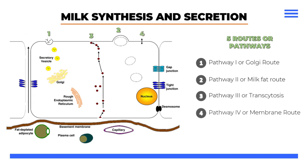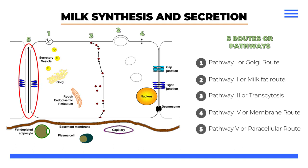Pathway 4, which depicts the membrane route, involves ions and other small molecules entering milk through membrane transporters. Lastly, Pathway 5, or the paracellular route, involves a direct transfer of serum and interstitial substances into milk that can take place between cells in some species.